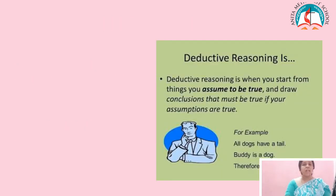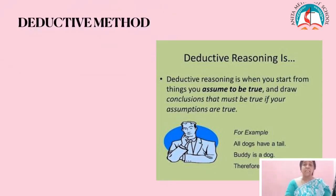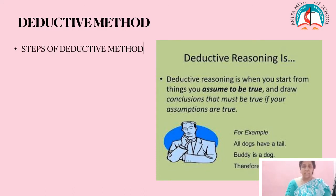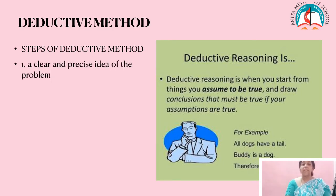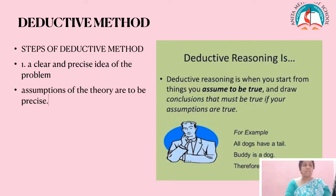Now we are going to learn the steps of the deductive method. The analyst must have a clear and precise idea of the problem. Then, when he has a clear idea, he has to take some assumptions. The assumptions of the theory are to be precise — that means they should be clear and accurate.